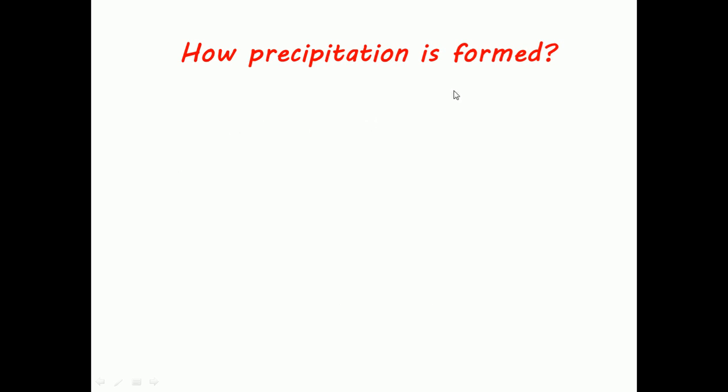How is precipitation formed? The following are four conditions for precipitation to be formed. The atmosphere must have moisture.